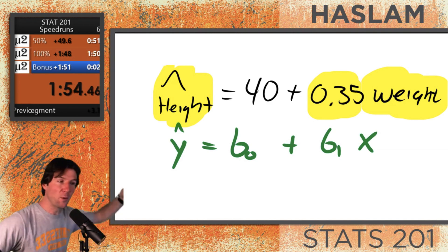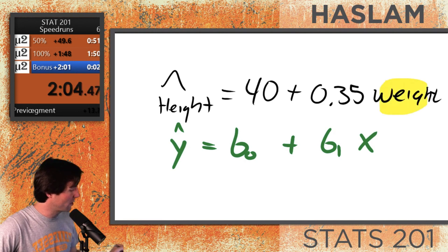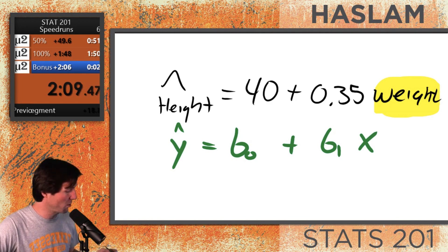Now for the bonus, we're still in bonus speedruns not over yet, because there's an important thing you might notice. When I interpreted that intercept, we actually have what is called an illogical intercept. Because I said when somebody's weight is equal to 0, when someone's weight is equal to 0, we expect their height to equal 40 inches.